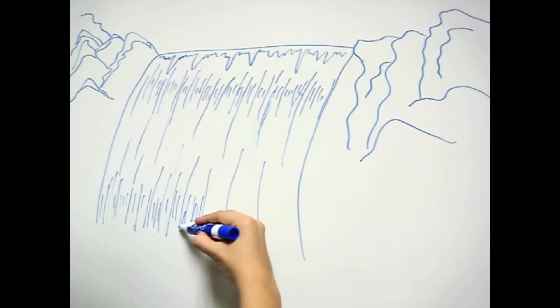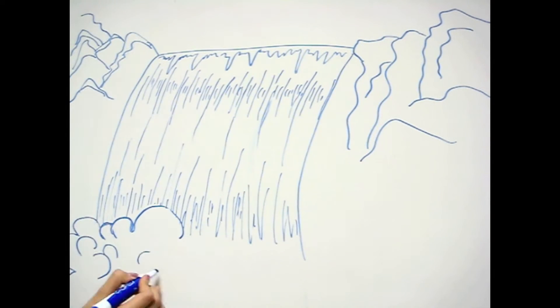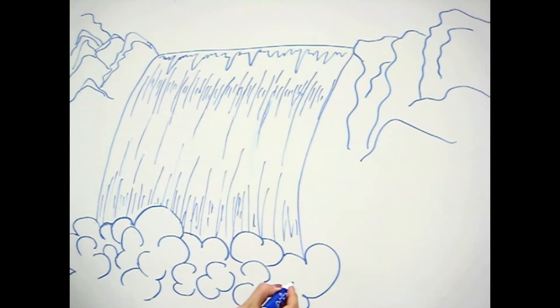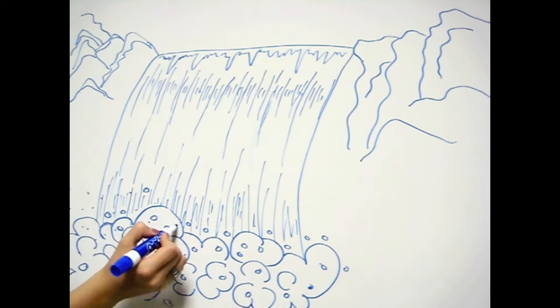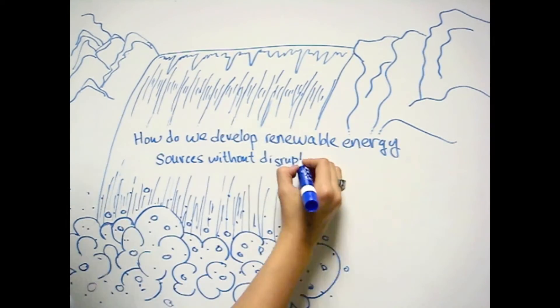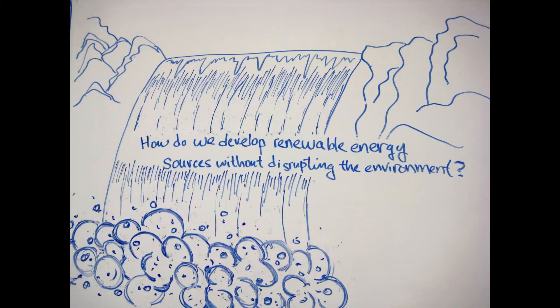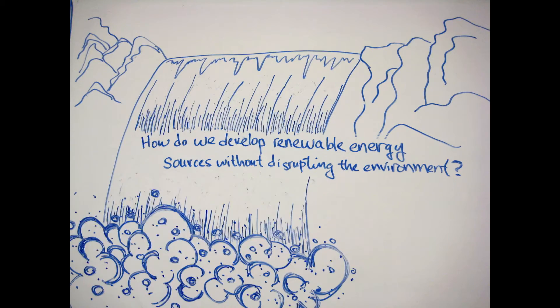Hydropower provides nearly 7% of the nation's electricity, and it holds tremendous potential for expansion. However, this promise comes with a unique challenge. How do we develop water as a renewable energy source without disrupting the ecosystem?